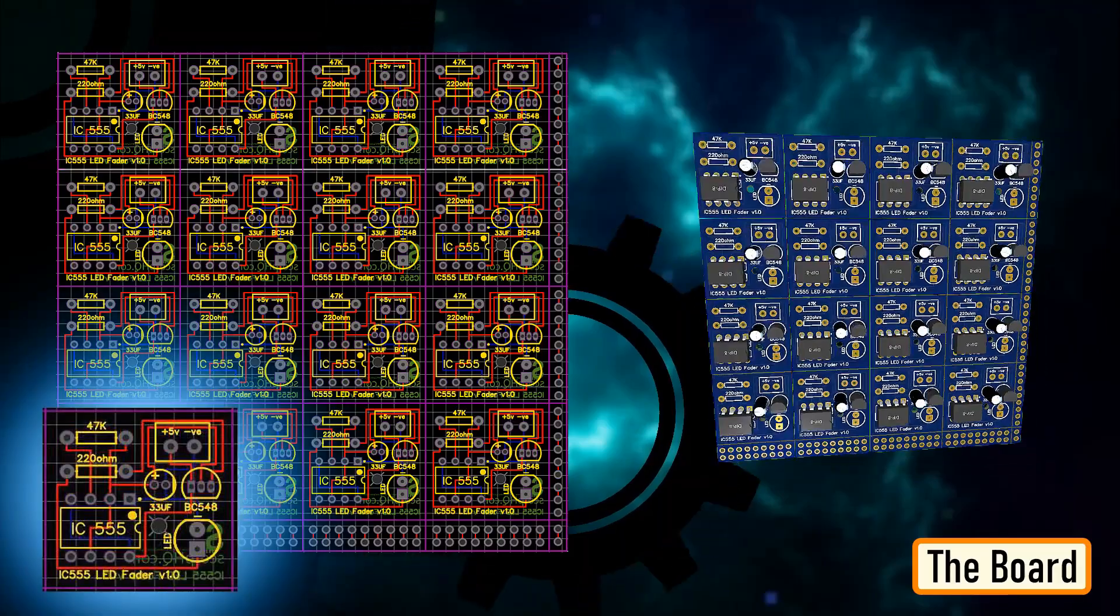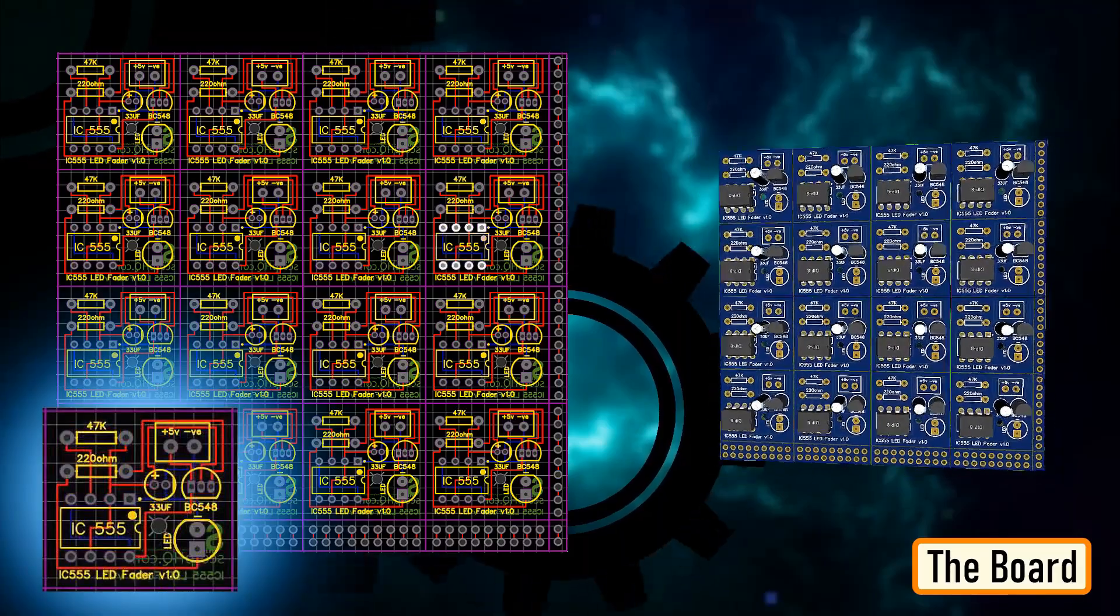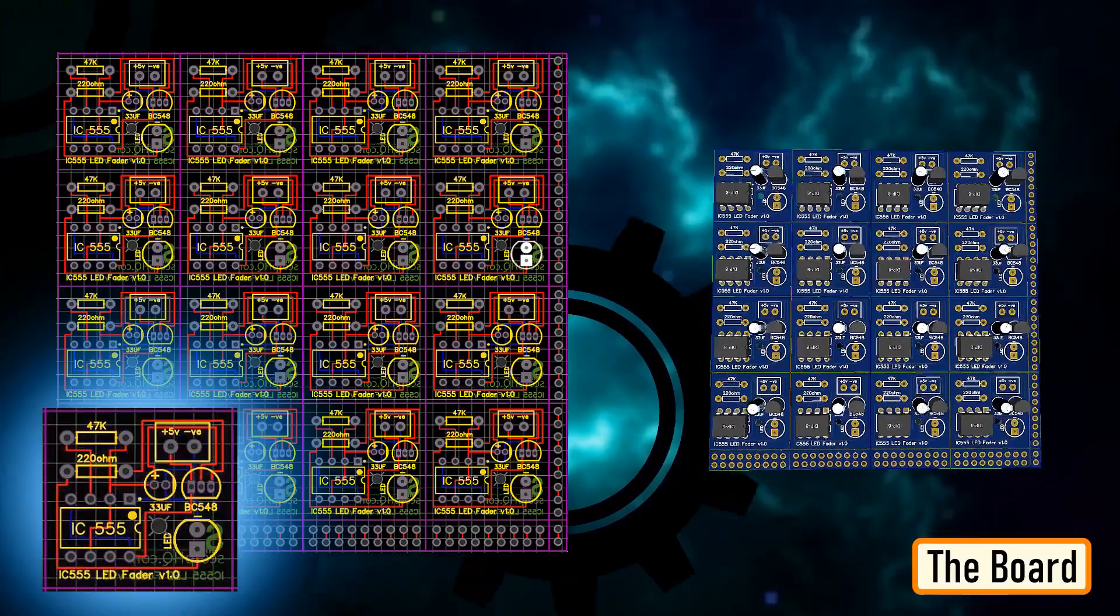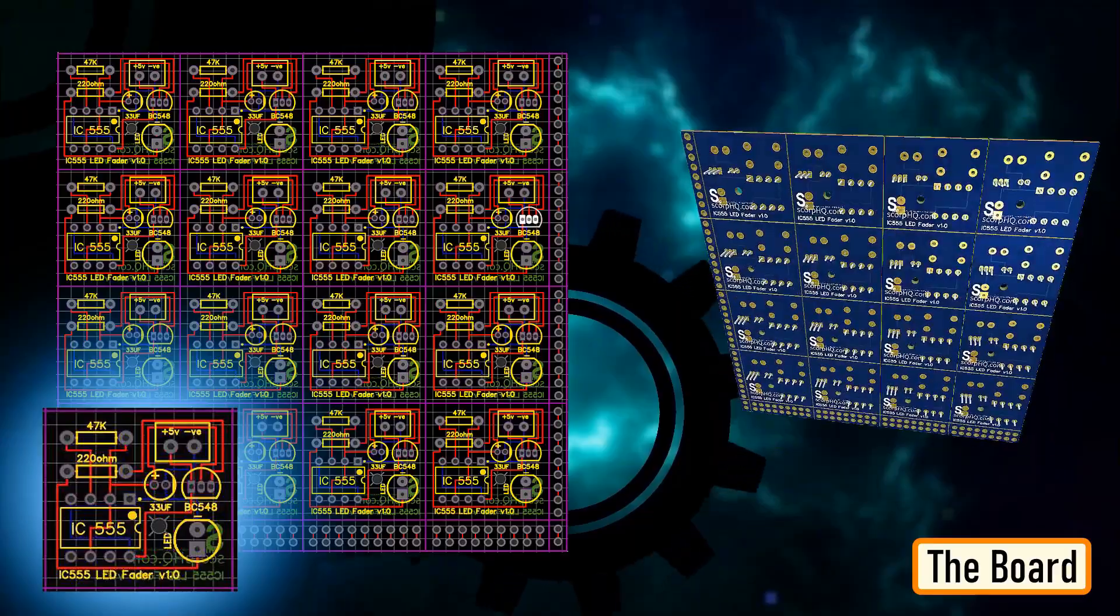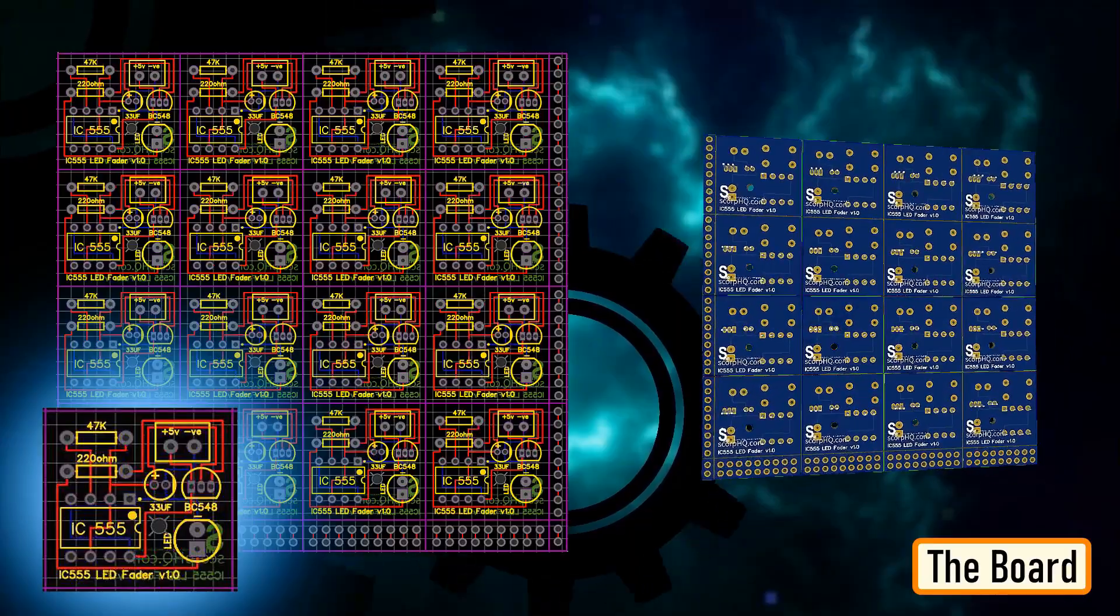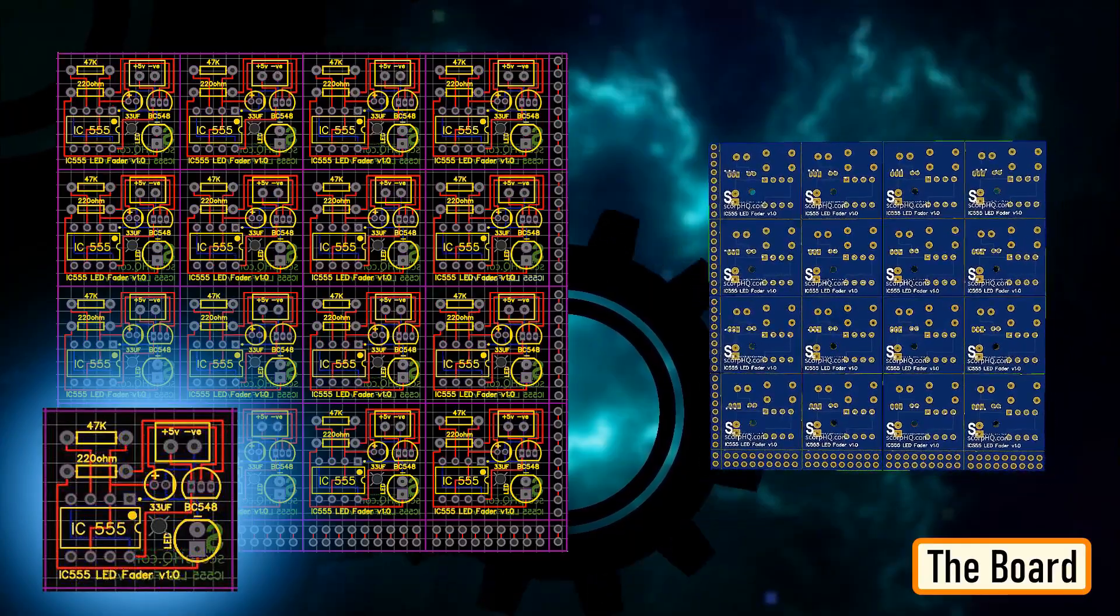So, this is how my board looks like in 2D and 3D. There are 16 breakout boards in this 100cm by 100cm assembly. You can download the Gerber file from the link provided in the description below and order it from PCBWay.